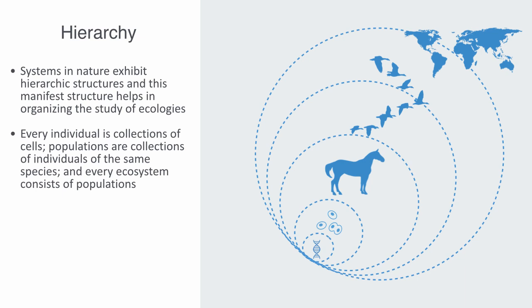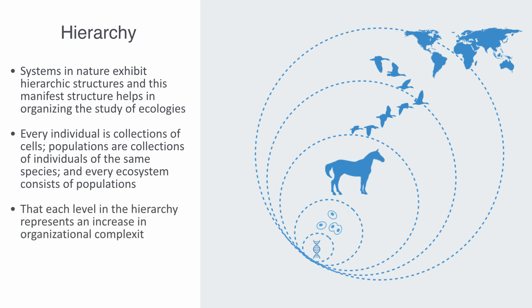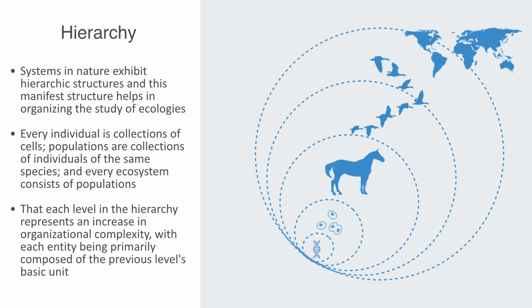Biological organization refers to the hierarchy of complex biological structures and systems. These theories posit that each level in the hierarchy represents an increase in organizational complexity, with each entity being primarily composed of the previous level's basic units. The basic principle behind this organization is the concept of emergence, where the properties and functions found at a hierarchical level are not present at the lower level.